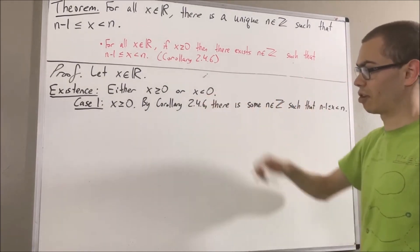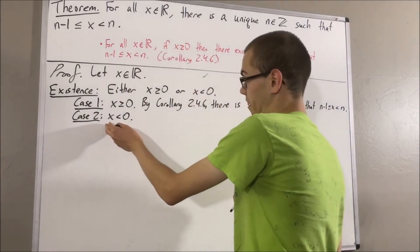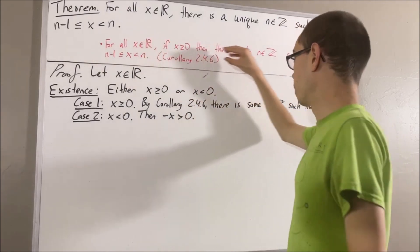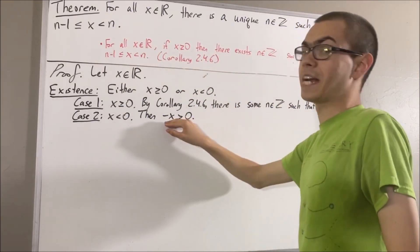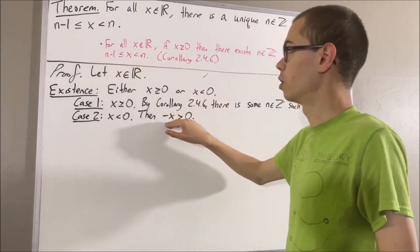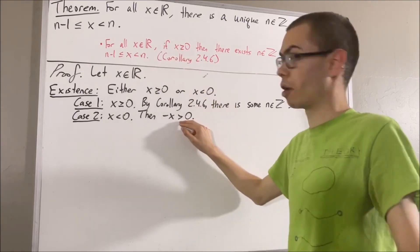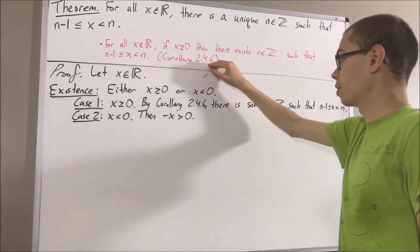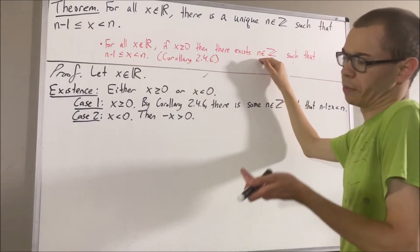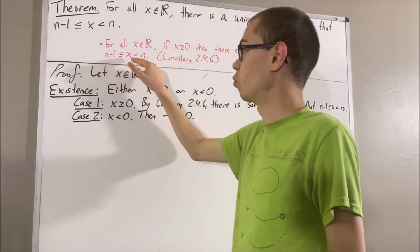Now let's move on to case two, where x is less than 0. Then the negative of x is greater than 0. So we can apply Corollary 2.4.6 to the negative of x, because the negative of x is greater than or equal to 0. Applying Corollary 2.4.6, we have that there is an integer — I'll call it p — such that p minus 1 is less than or equal to the negative x, which is less than p.